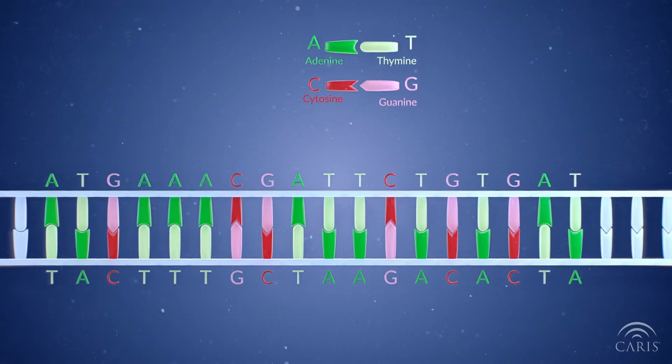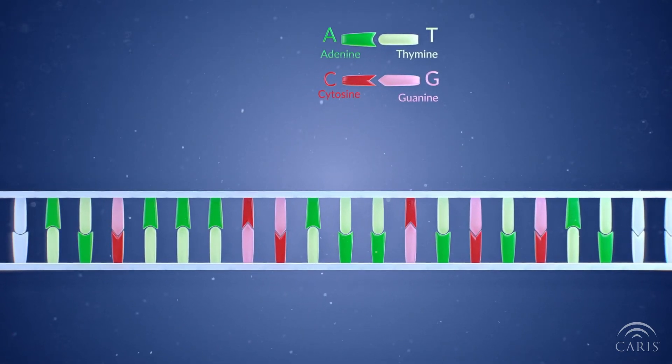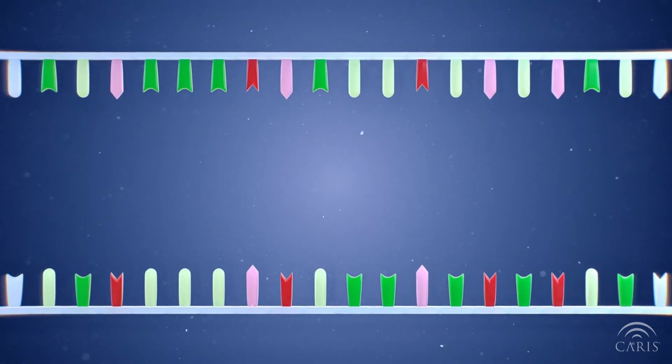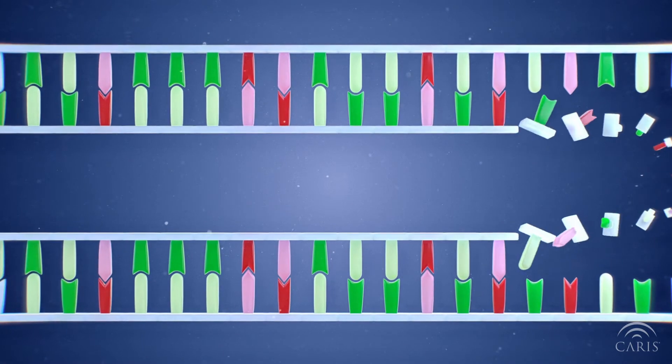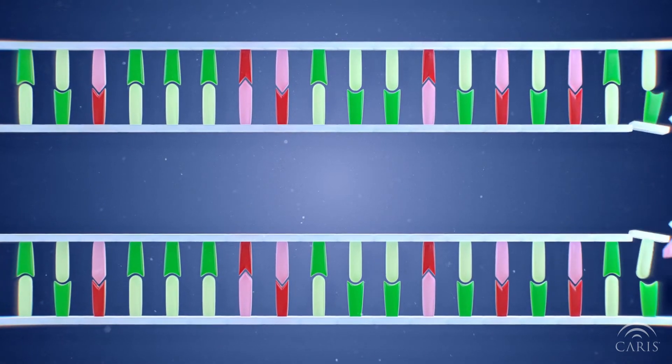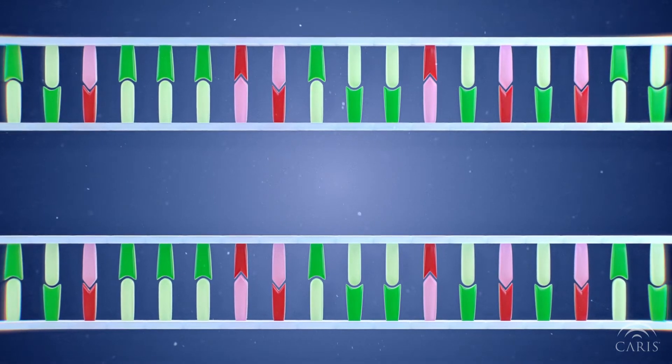As a cell gets ready to divide itself, it first must duplicate its DNA. To do this, the DNA is unwound and split apart so that new base pairs can begin to be matched to the two original strands. As a result, two identical sets of double-stranded DNA molecules are created.